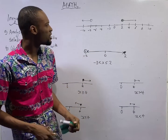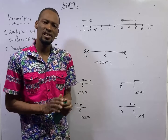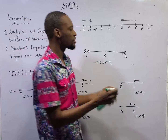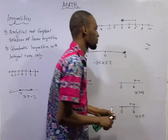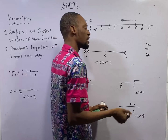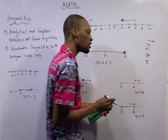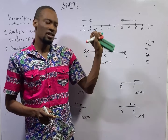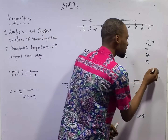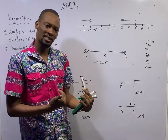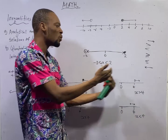In inequality, there are various directions an arrow can face. This symbol refers to greater than and this means lesser than. This means greater than or equal to and this means lesser than or equal to. Any time an arrow is going this way, it means two things: either greater than or greater than or equal to. If the arrow is facing this way, it means two things: lesser than or lesser than or equal to.